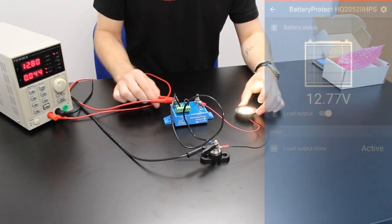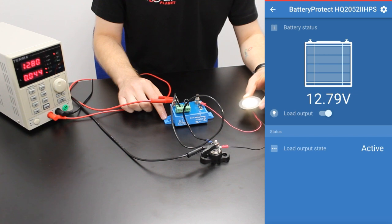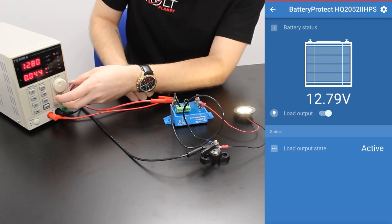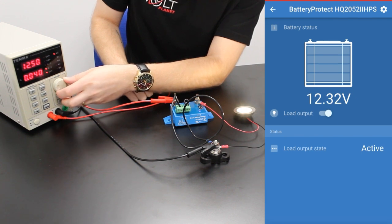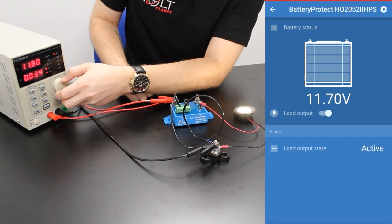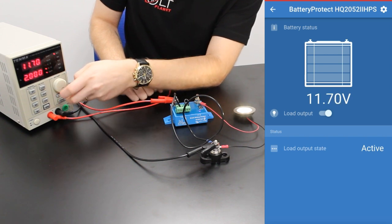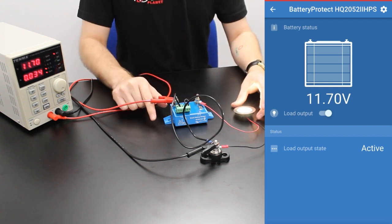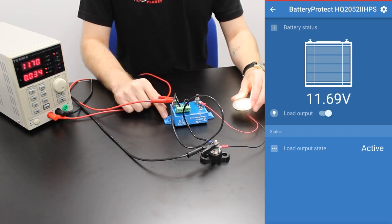So you can now see our LED light is on as our battery is at a good voltage. What we will do is we will go ahead and lower this voltage down below our preset. It was 11.8 so we will lower it to 11.7.